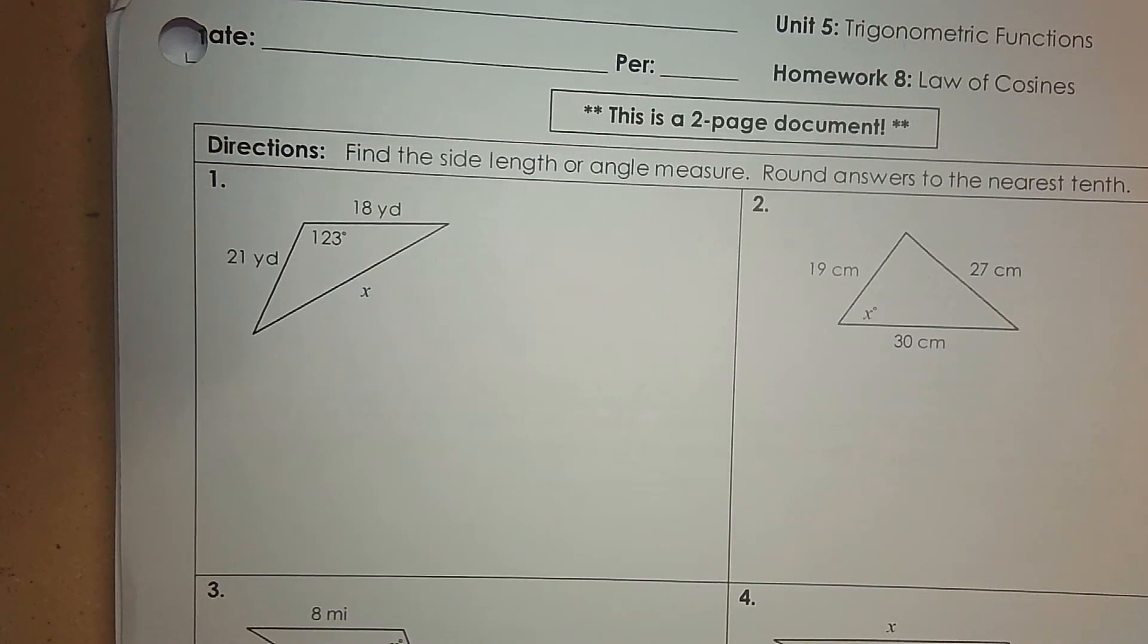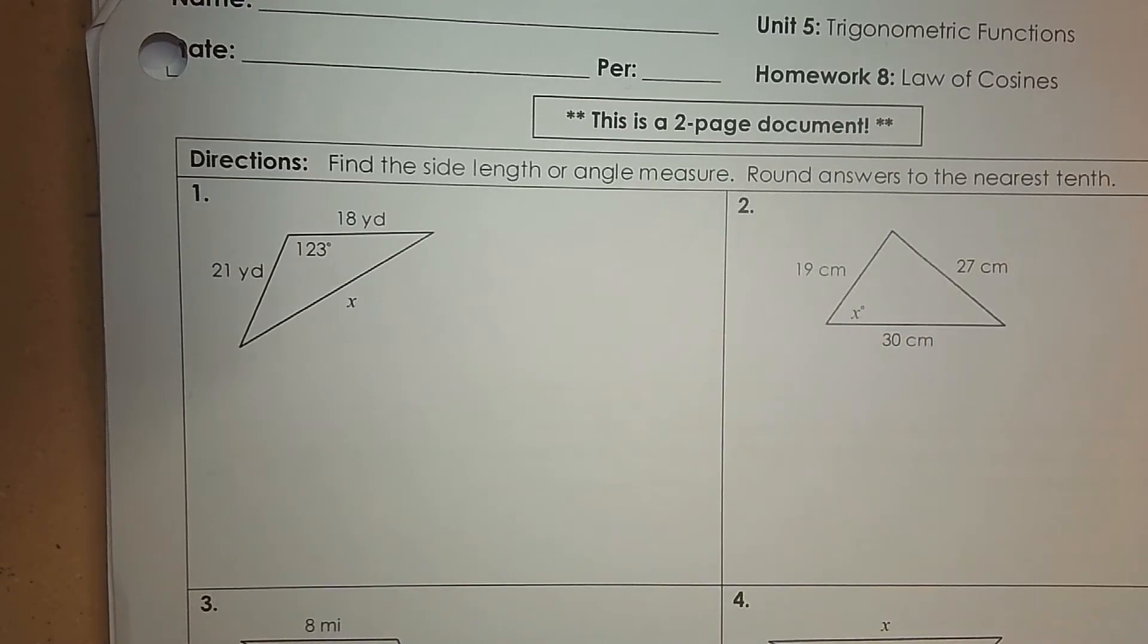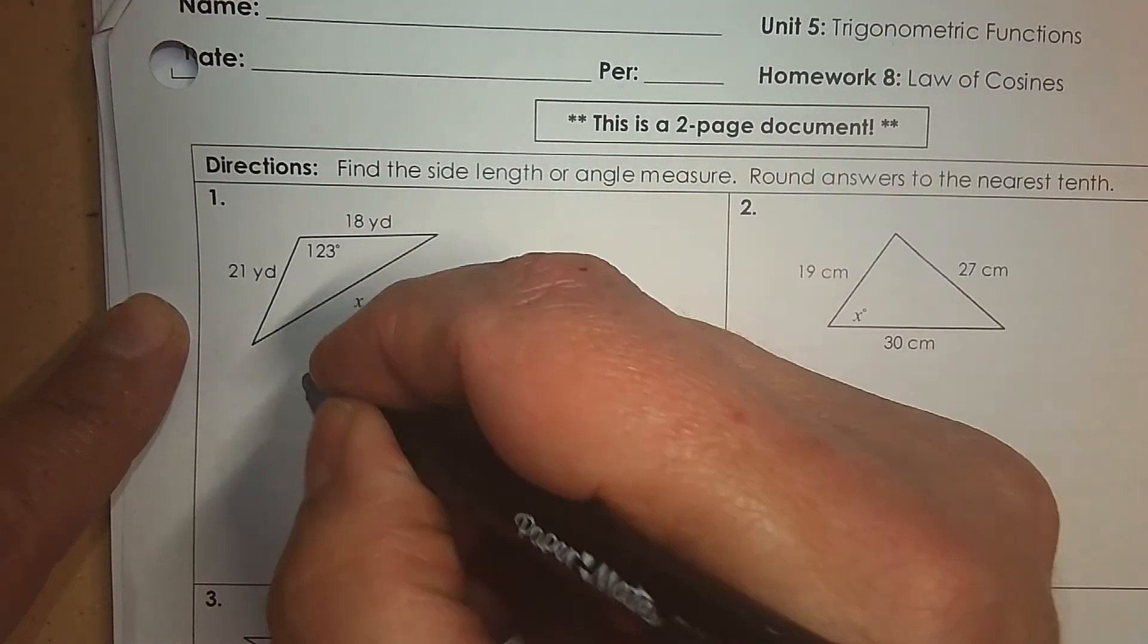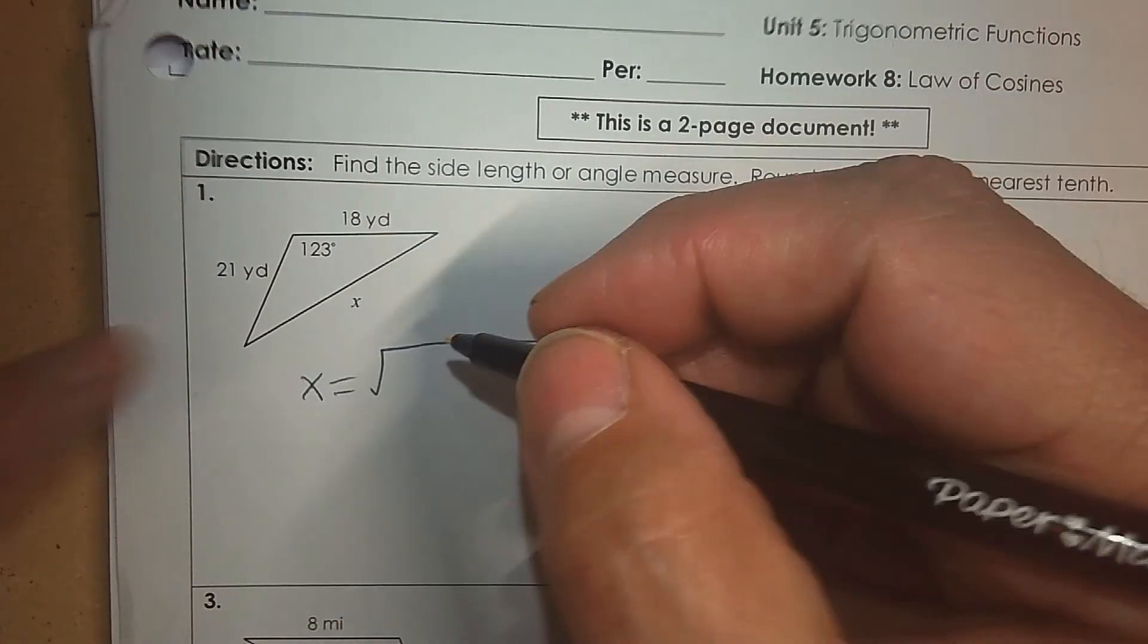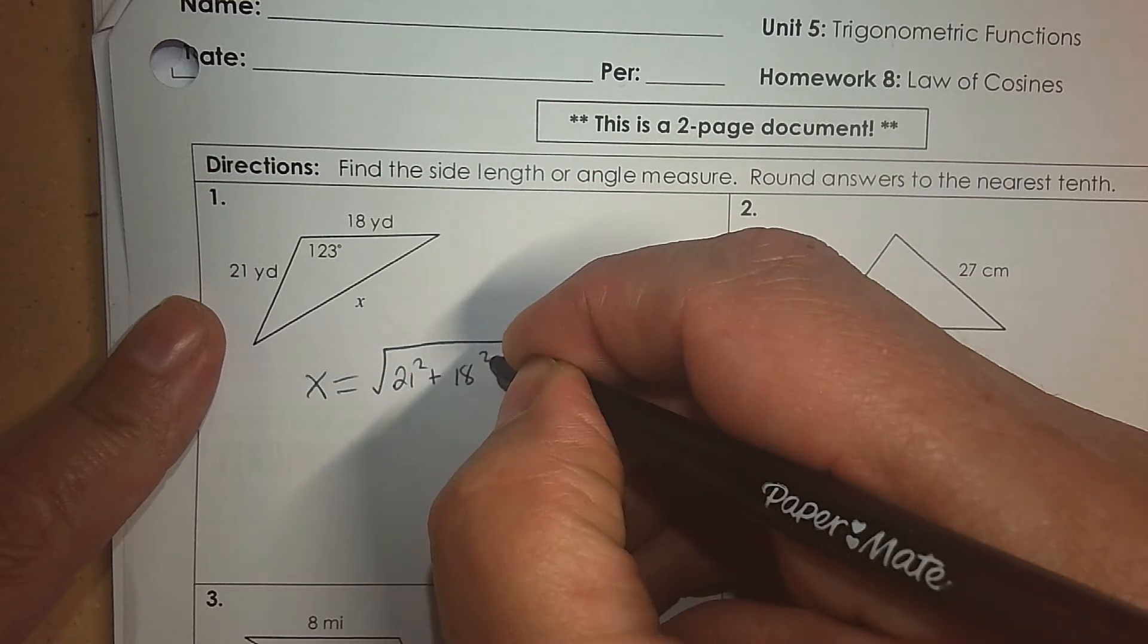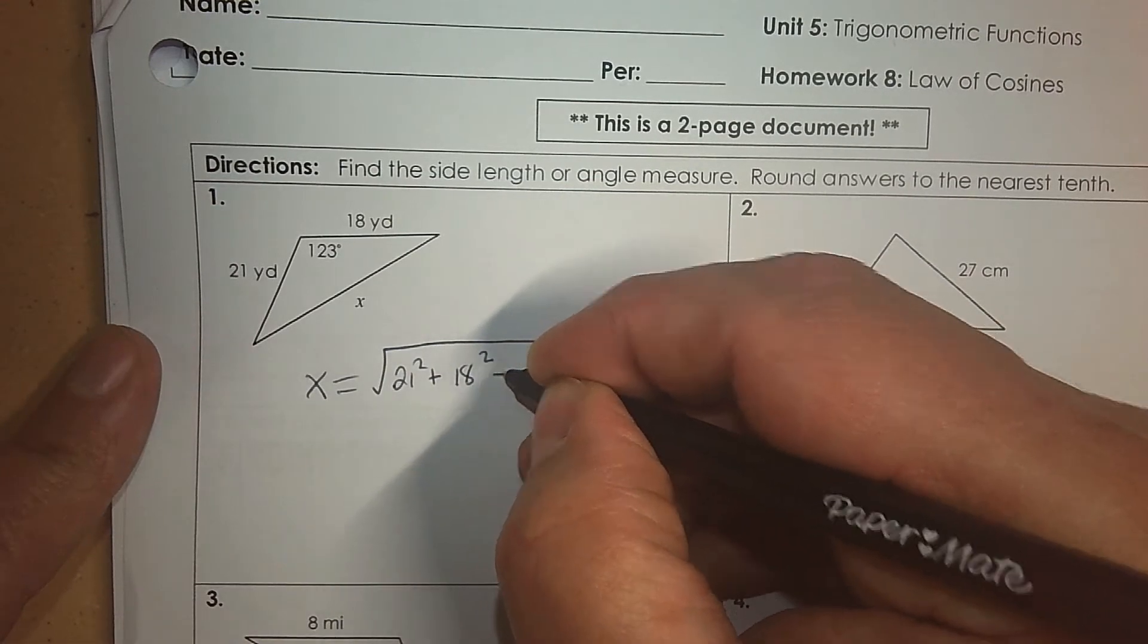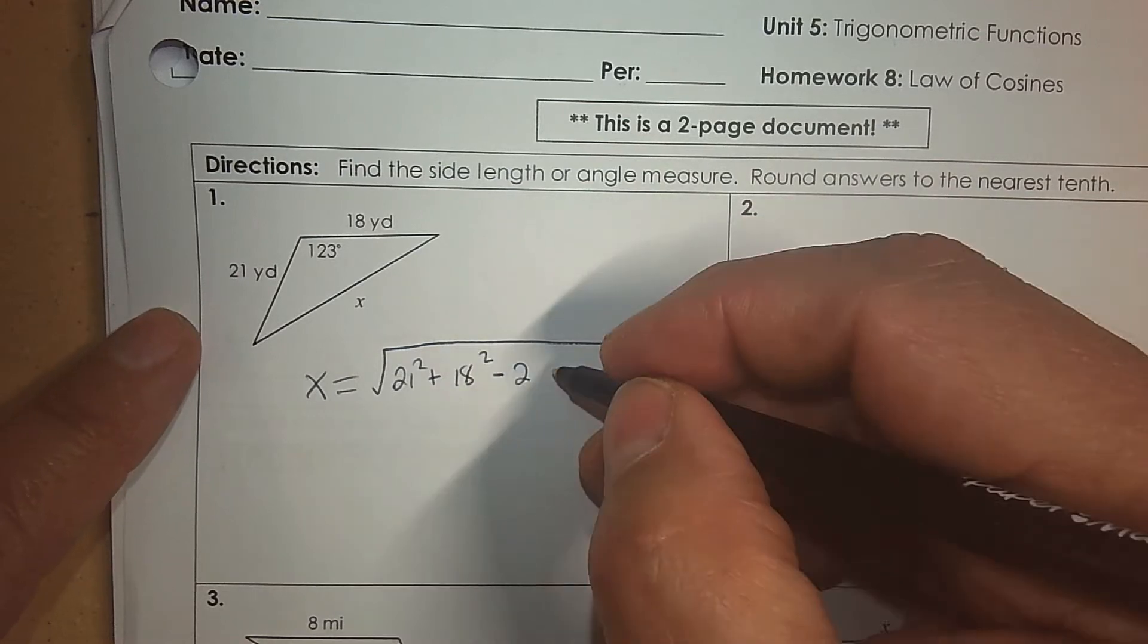All right, here's your homework for law of cosines, finding missing sides and angles of any type of triangle. So if I want to find x, I start with the square root. Now order's not going to matter here, so we're going to go 21 squared plus 18 squared. But then we're going to subtract 2, that's part of the formula.